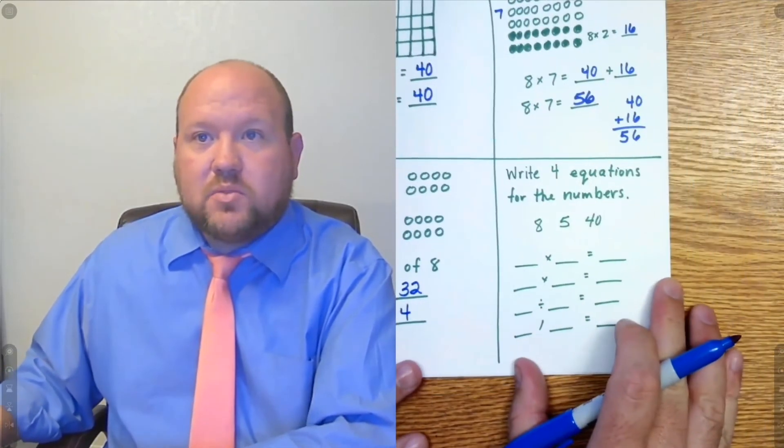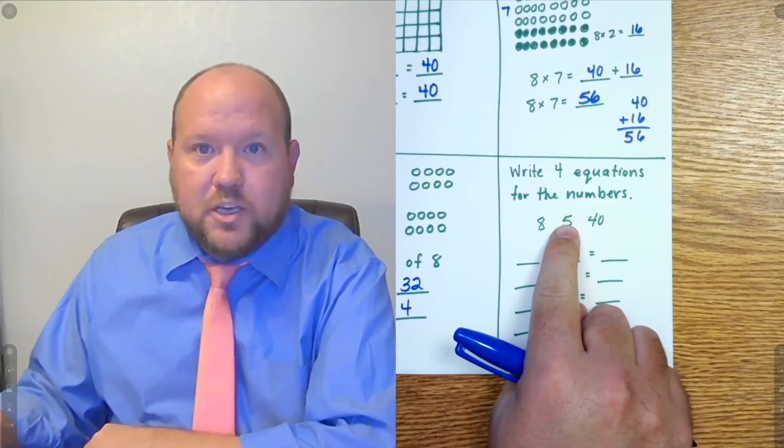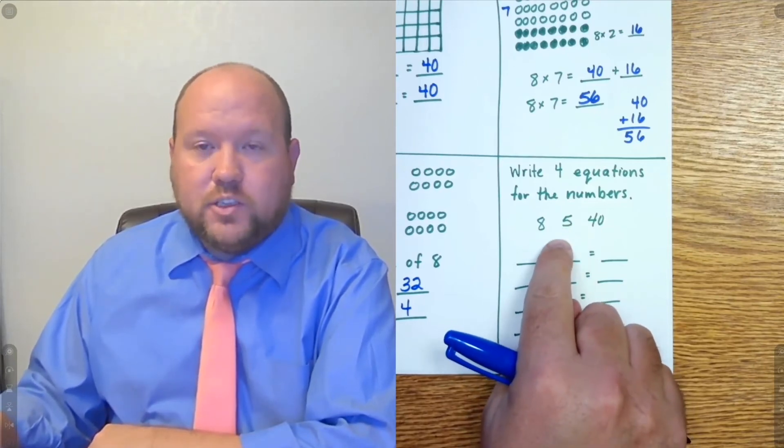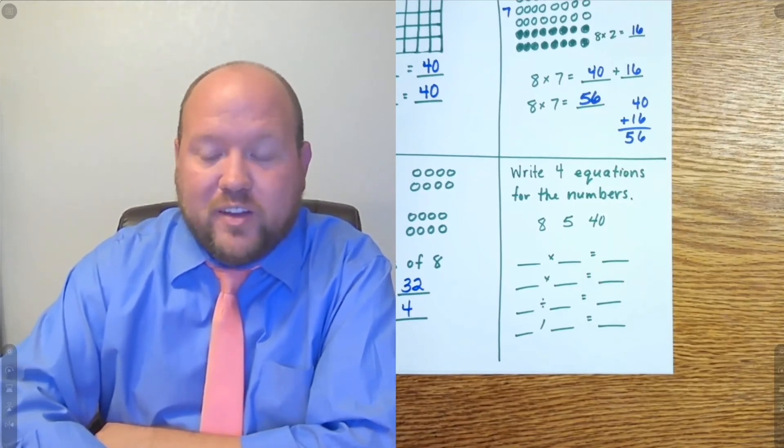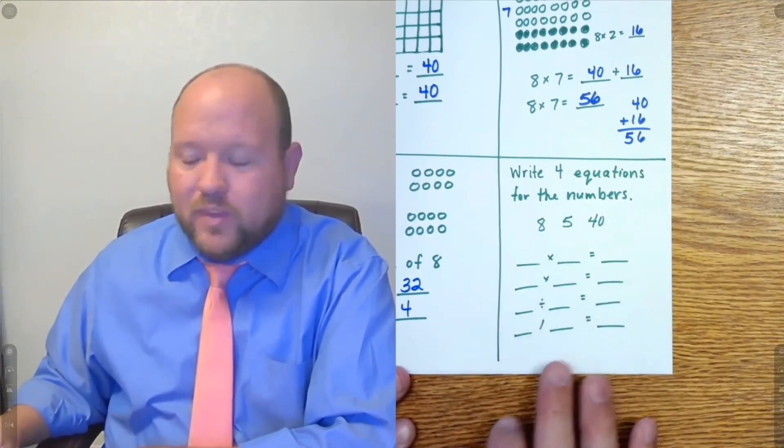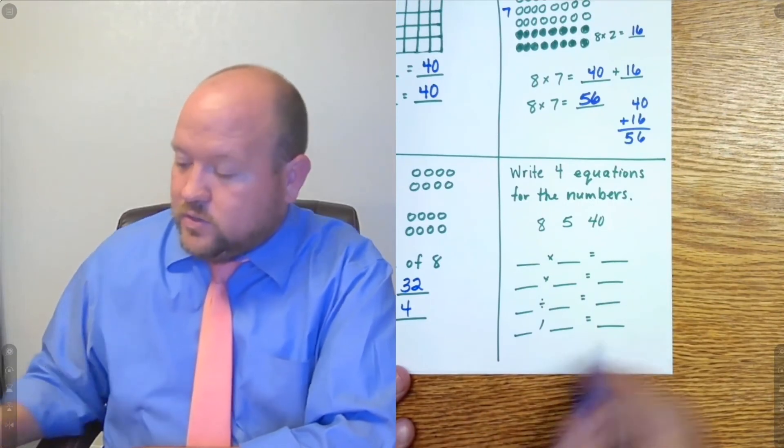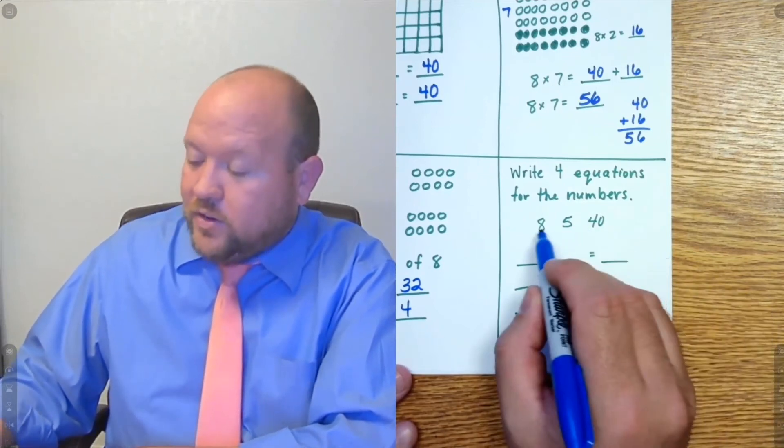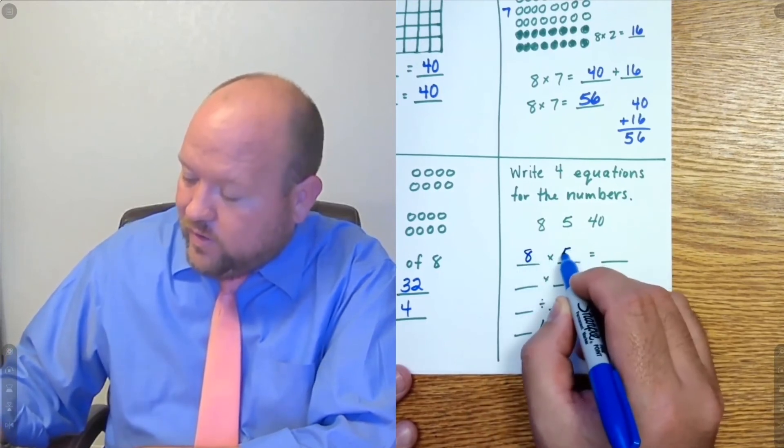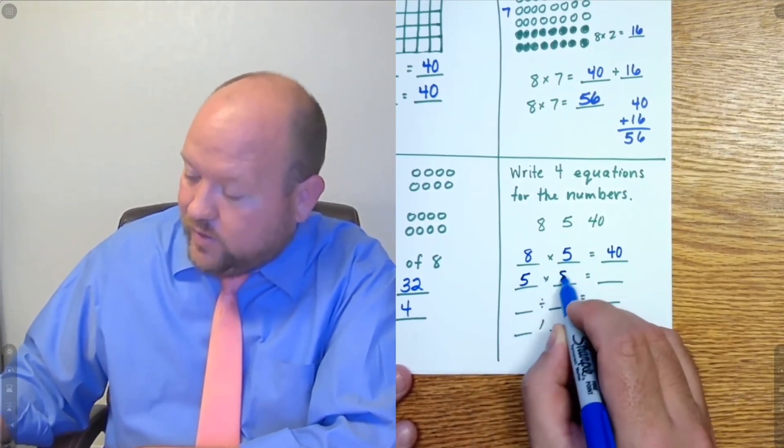One last one. So this one, I'd like for you to pause the video if you need to. But I want you to see if you can come up with two multiplication equations and two division equations using these numbers right here. If you need to, go ahead and pause and then come back when you're ready. So hopefully you're able to figure these out either by writing them down on paper or just holding them in your memory. What can I do with these three digits? So I couldn't do 40 times 5 because that would be a big number. That'd be 200. But I can do 8 times 5. 8 times 5 equals 40. And if 8 times 5 equals 40, I know that 5 times 8 equals 40.